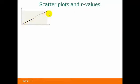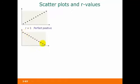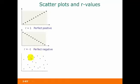Here's a scatterplot we looked at before. This is a perfect positive linear relationship, so the R value for this would be positive 1. This one is a perfect negative linear relationship because it's absolutely in a straight line, so the R value for that is negative 1. And in this scatterplot, there is no relationship at all, so the R value for this would actually be 0.